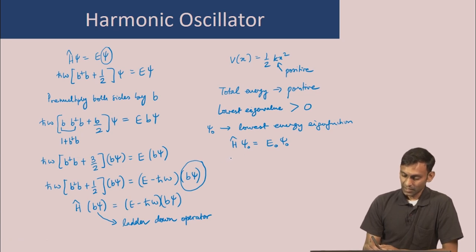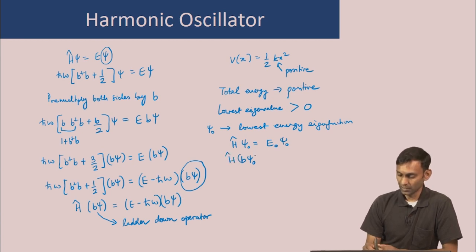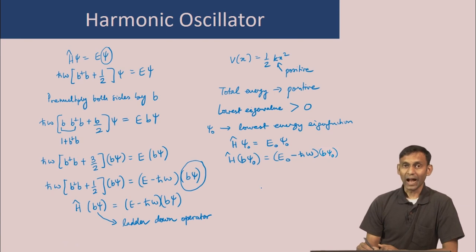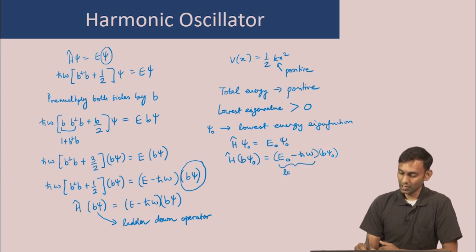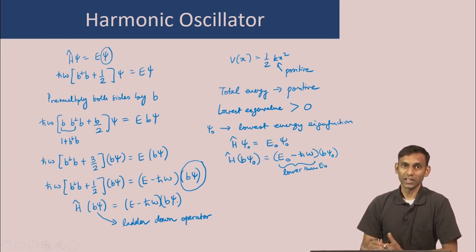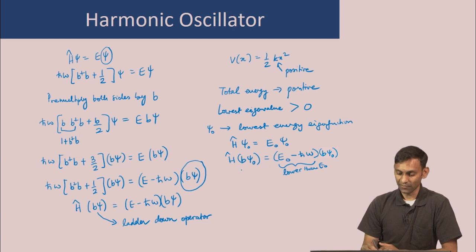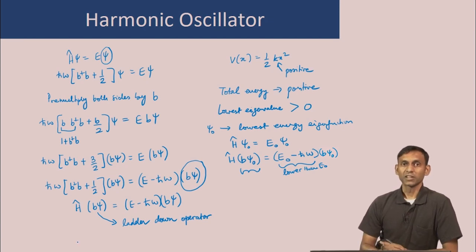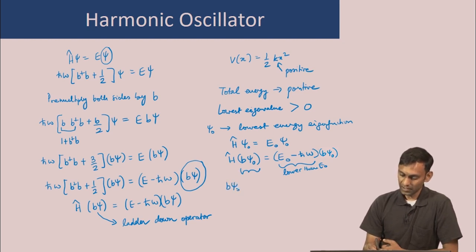We have seen that b of psi 0 is also an eigenfunction of the Hamiltonian with eigenvalue E_0 minus h-bar omega, which implies there is another eigenfunction with energy lower than E_0. This is a contradiction: on the one hand psi 0 is the lowest energy eigenfunction, and on the other hand b of psi 0 seems to have lower energy. This contradiction can be resolved if b psi 0 is equal to zero.